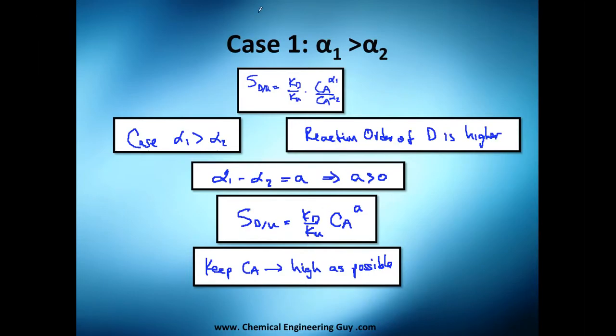It's now time to analyze case number one, which is essentially when alpha one is greater than alpha two. Remember our selectivity comes from our formal definition of the rate of reaction of the desired product and the rate of reaction of the undesired product. This is essentially this here and this one is this one right here.